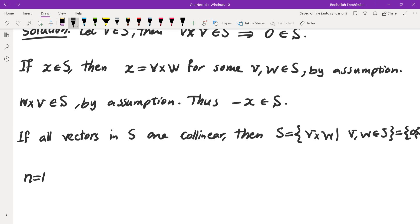So N equals one is a possibility. S equals zero satisfies the given property.